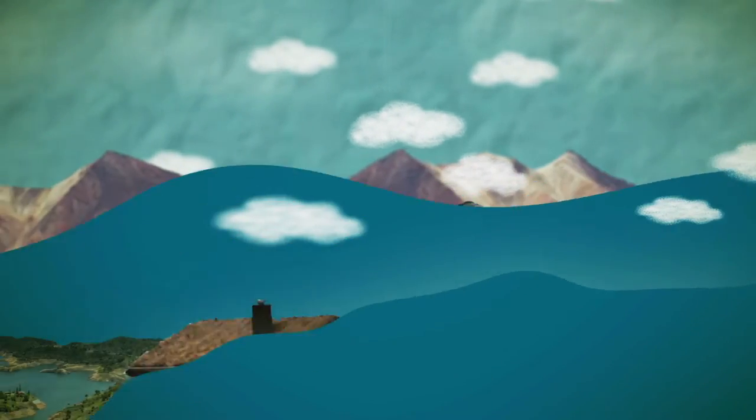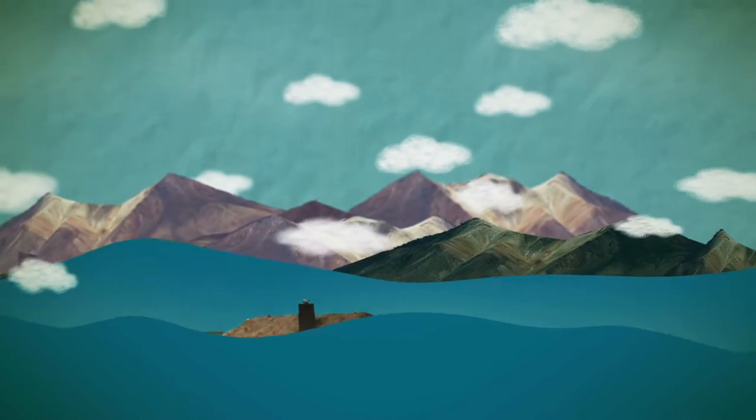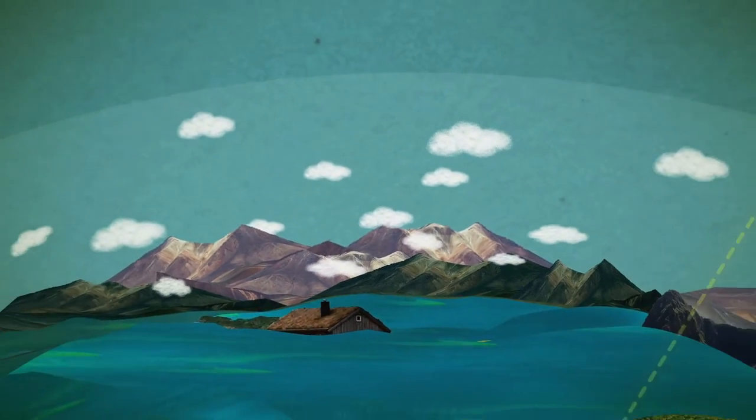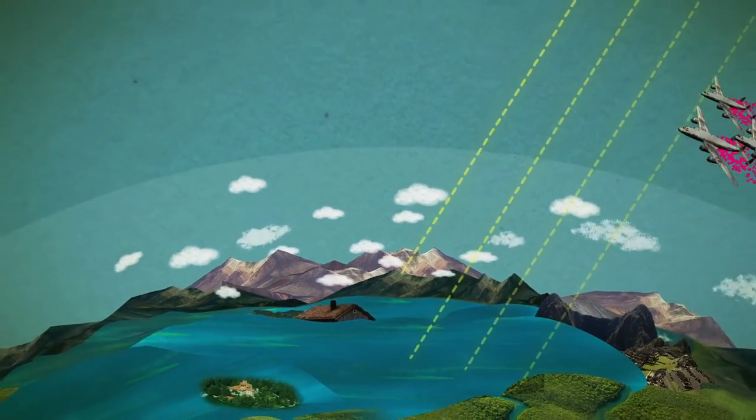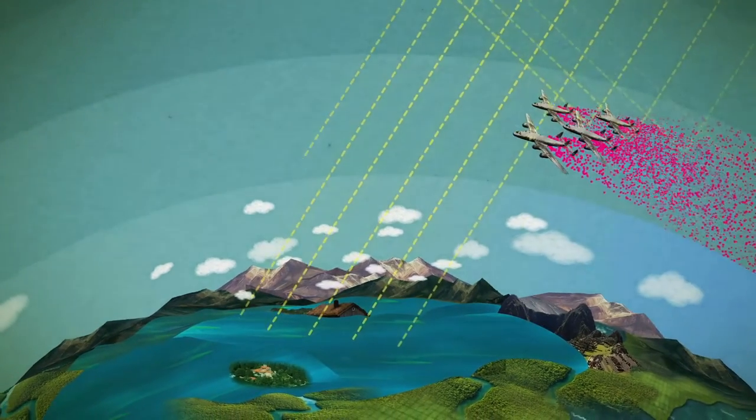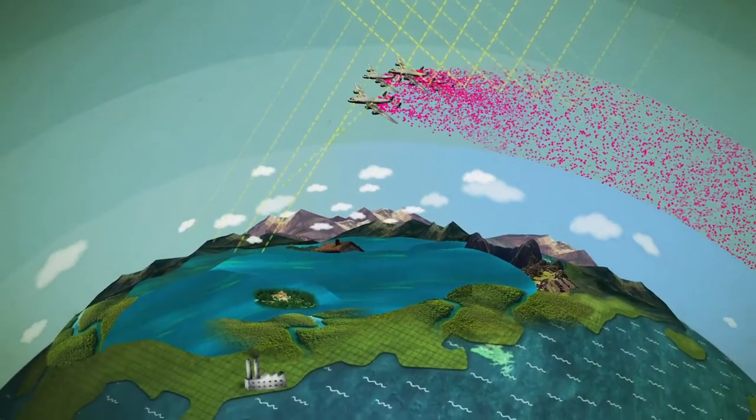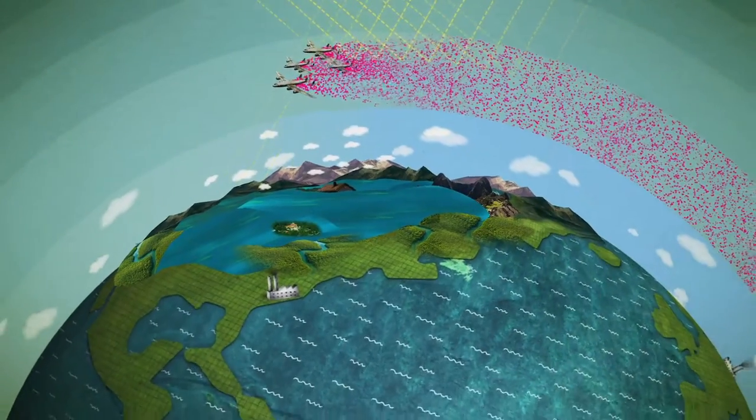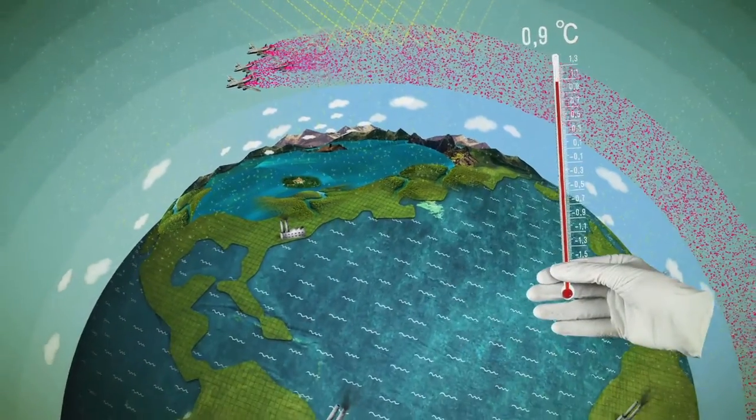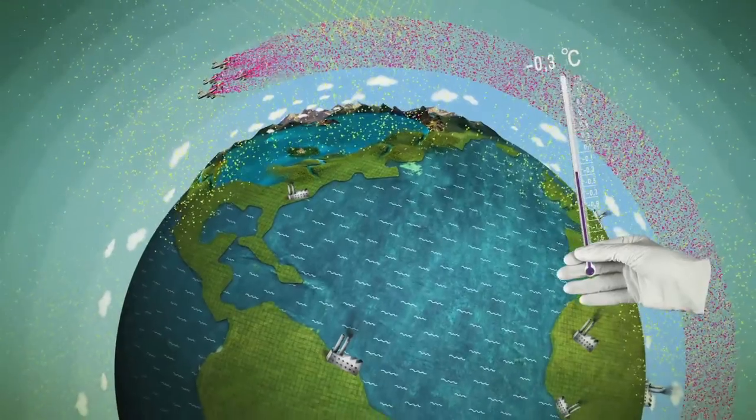As for further unpredictable side effects of large-scale climate manipulation, these might become apparent only after it had been implemented. Solar radiation management would address only one symptom of climate change, namely global warming. Meanwhile, greenhouse gases in the atmosphere would continue to build up.